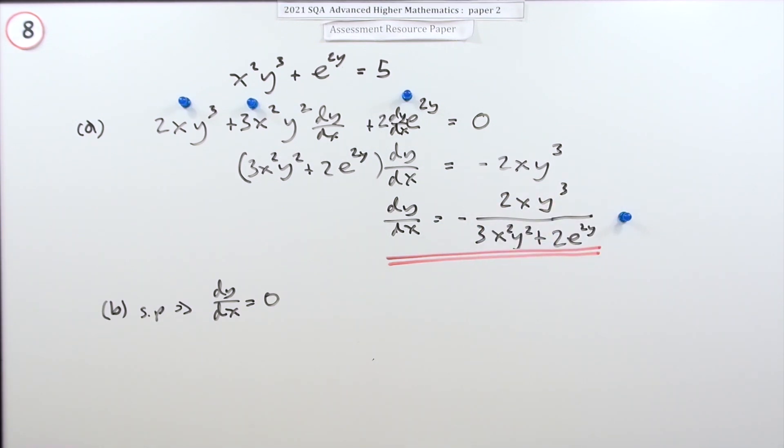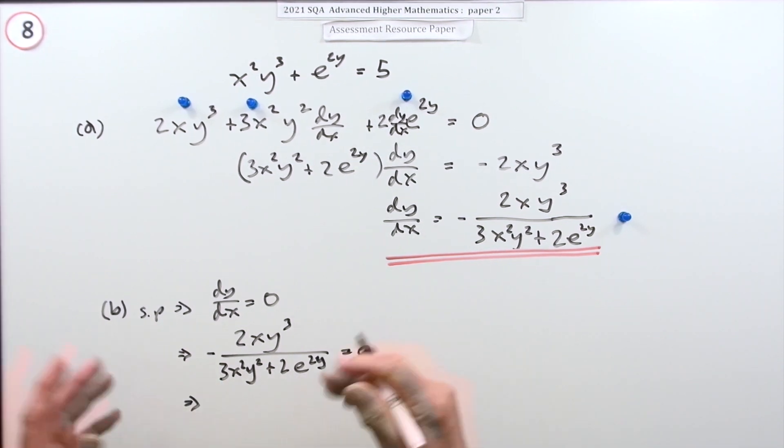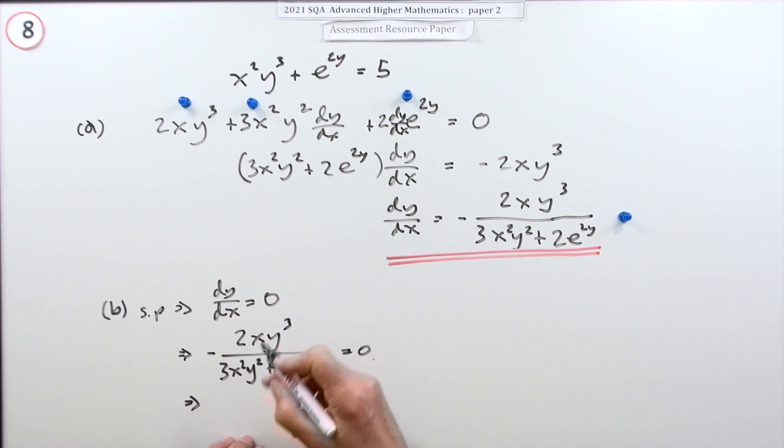So my next statement should really just be the numerator equals zero rather than writing out the whole lot, but I will just put out the whole lot. That means that equals zero, which of course means the numerator equals zero.